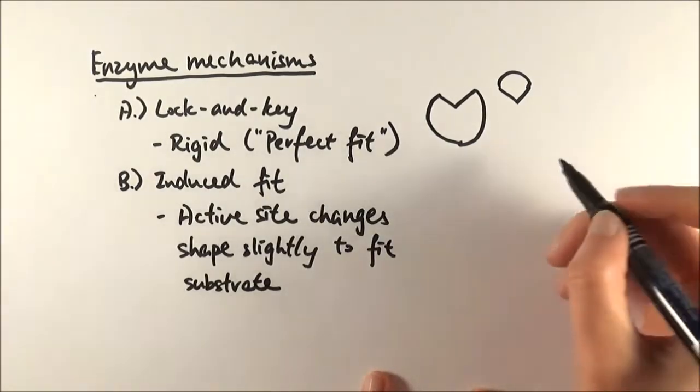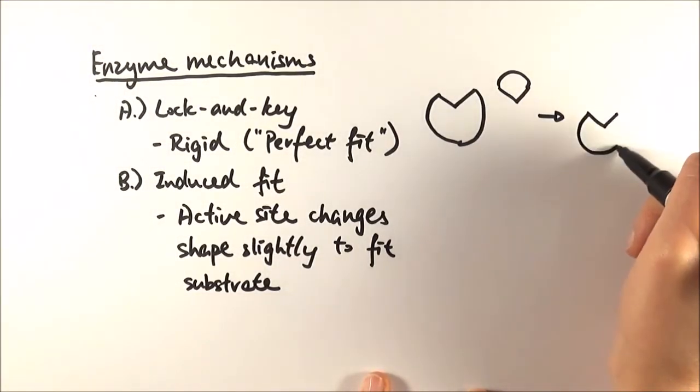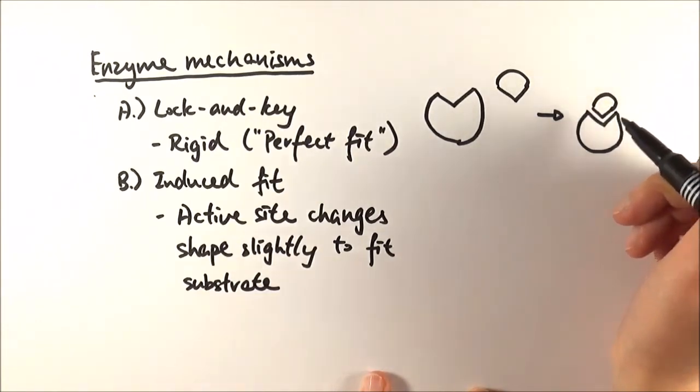So for example, in the lock and key model, this is what you need to happen in order for the reaction to occur. So they have to fit in perfectly at some particular angle.